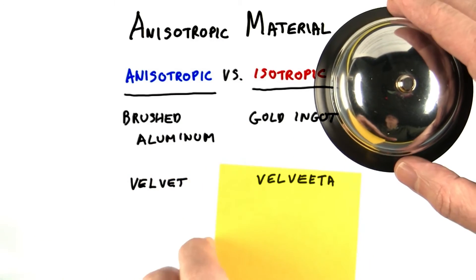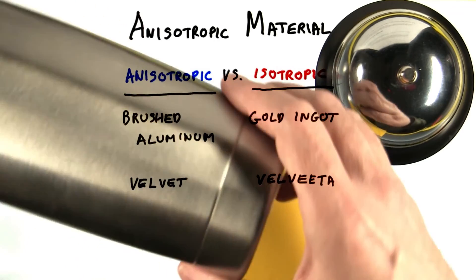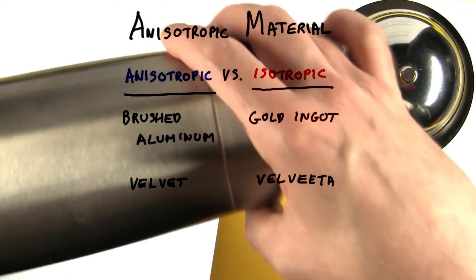Here are two materials that as you rotate them, it doesn't really change how they reflect the light. Here's a material where it does. As you rotate it, the light reflects in different ways.